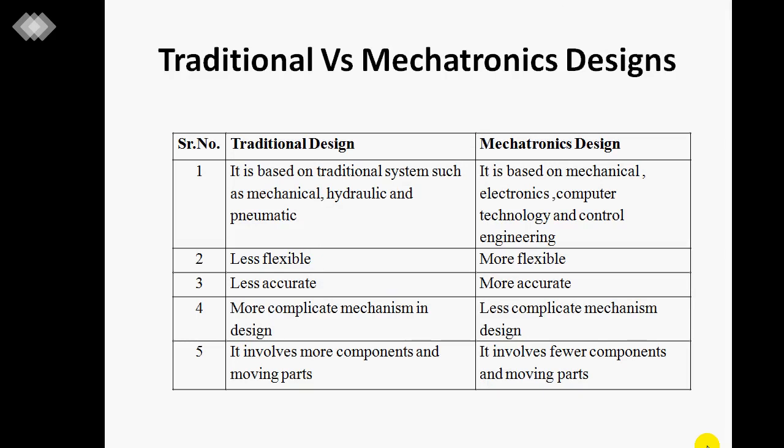Now we move to traditional versus mechatronics design. In the traditional approach, the system depends on mechanical, hydraulic, and pneumatic systems. Nowadays, it involves mechanical, electronics, and computer technology with control engineering. In traditional design, it is less flexible and more complicated compared to mechatronics design. In a mechatronics system, there are fewer requirements for components and moving parts, resulting in less weight — which is an advantage over traditional systems.